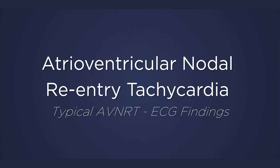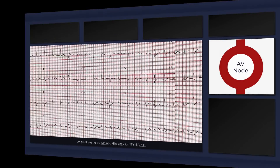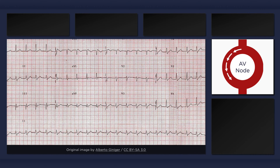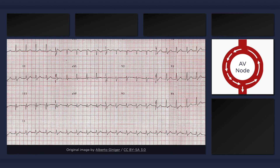This lecture will describe the ECG findings associated with typical atrioventricular nodal re-entry tachycardia. AVNRT is a paroxysmal supraventricular tachycardia that occurs due to a functional re-entrant circuit within the nodal tissue. The electrical impulse goes round and round, typically down the slow pathway and up the fast, resulting in a regular rate of QRS complexes.